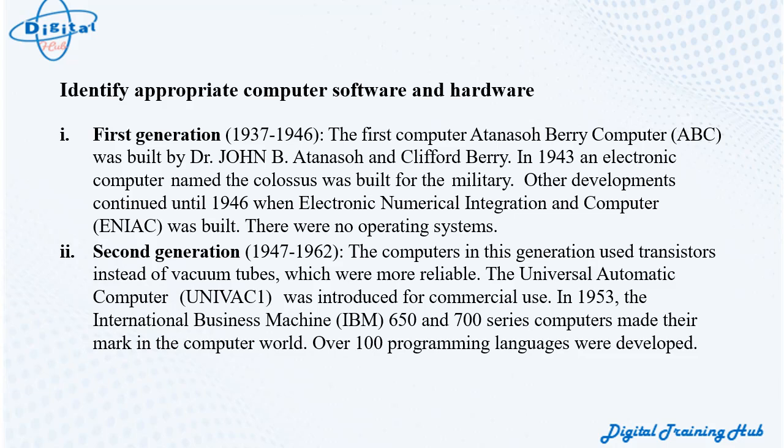First generation (1937–1946): The first computer, the Atanasoff-Berry Computer (ABC), was built by Dr. John B. Atanasoff and Clifford Berry. In 1943, an electronic computer named the Colossus was built for the military. Developments continued until 1946 when the Electronic Numerical Integration and Computer (ENIAC) was built. There were no operating systems in this generation.